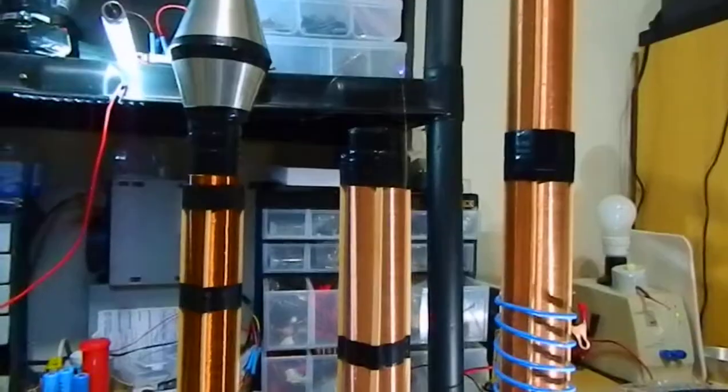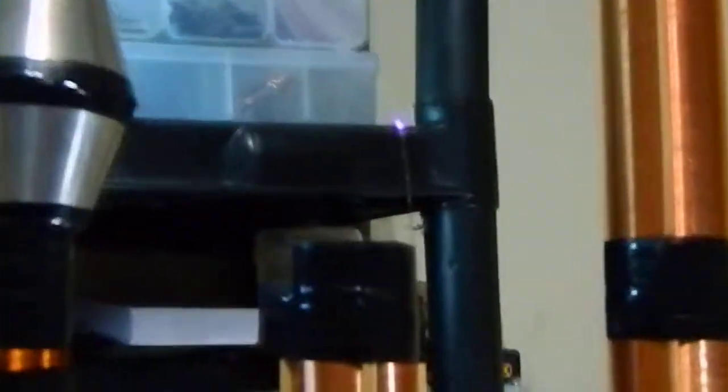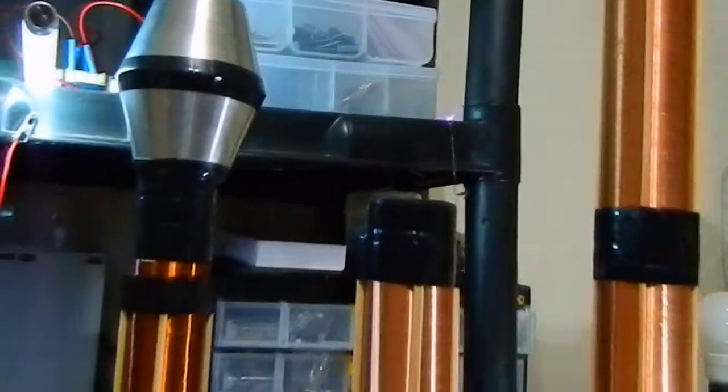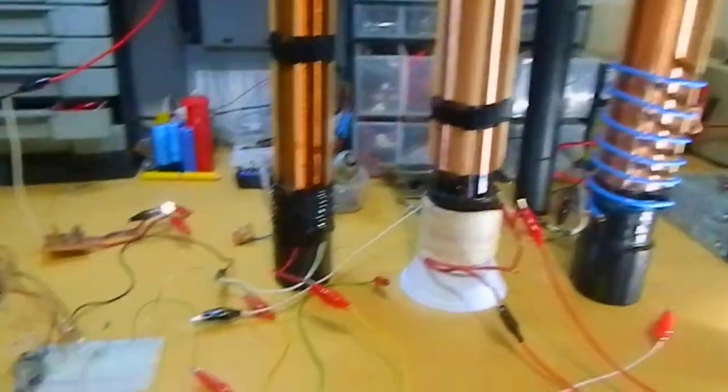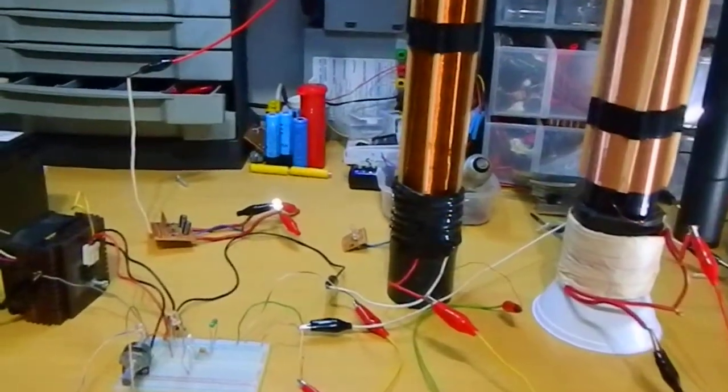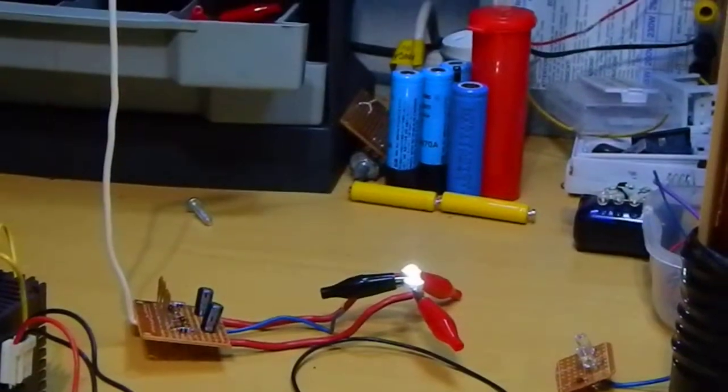As you can see, the plasma is much stronger now. The LEDs connected to the radiant energy collector are with the same kind of brightness. The fluoro on the top here is also the same type of brightness.